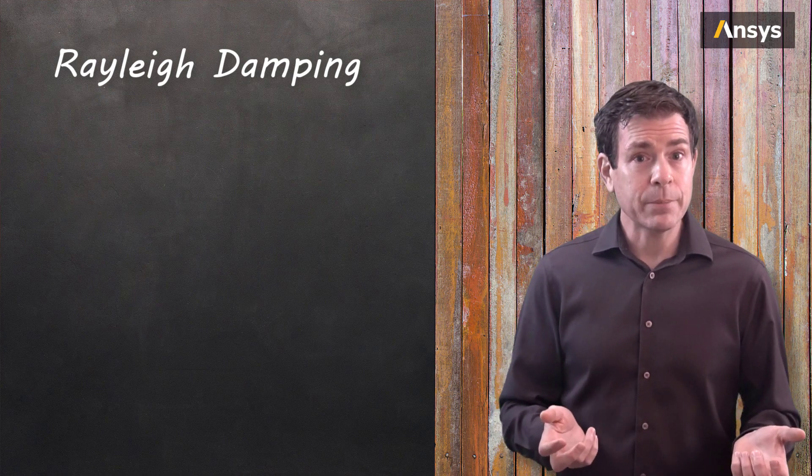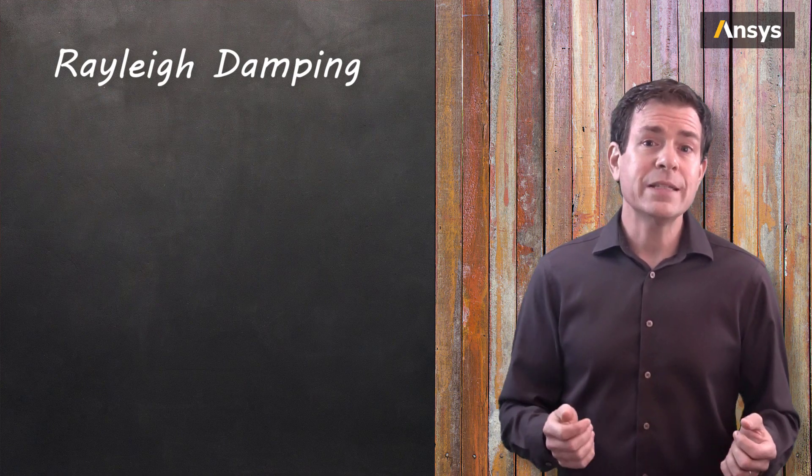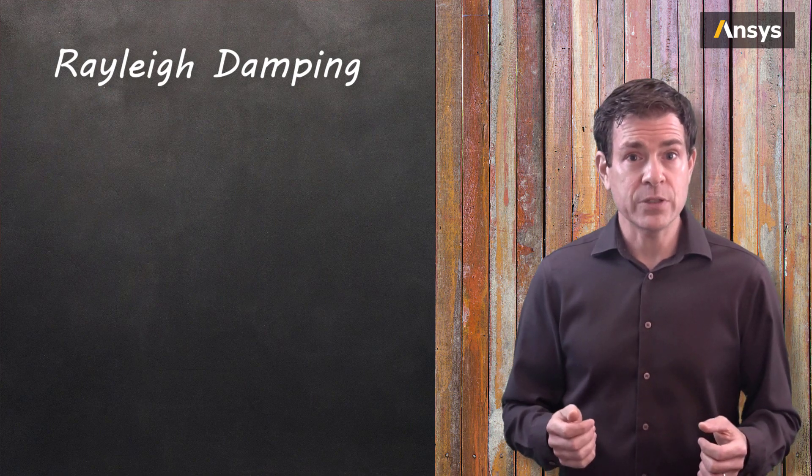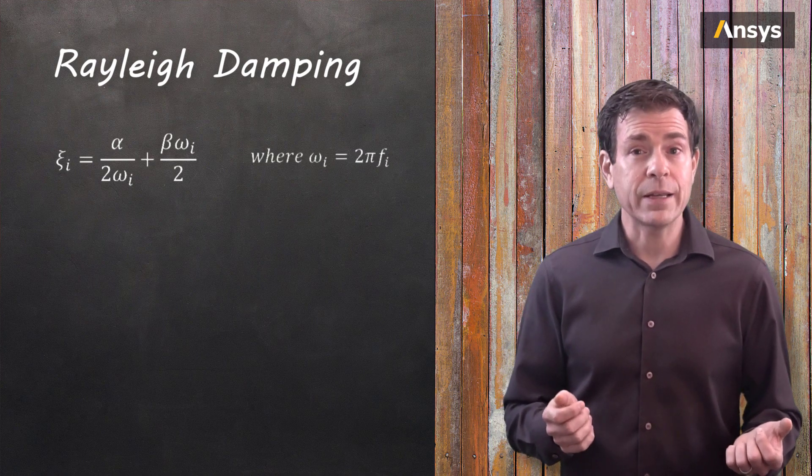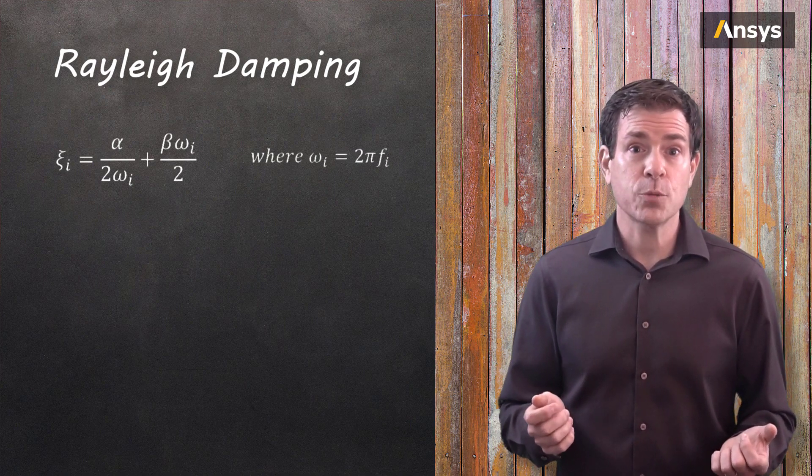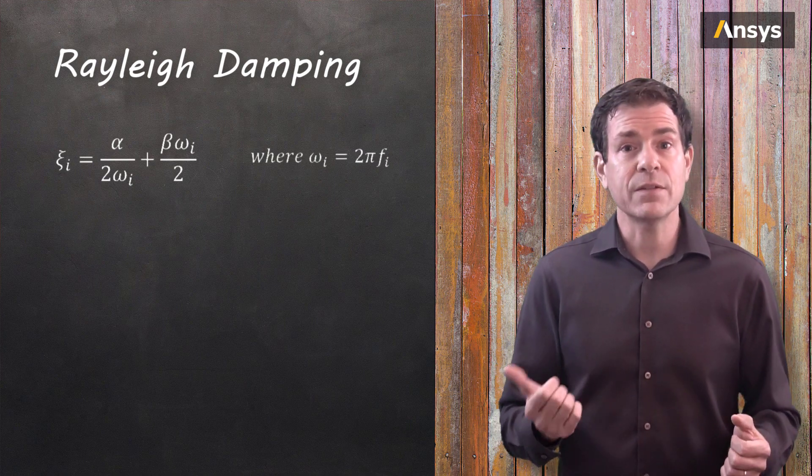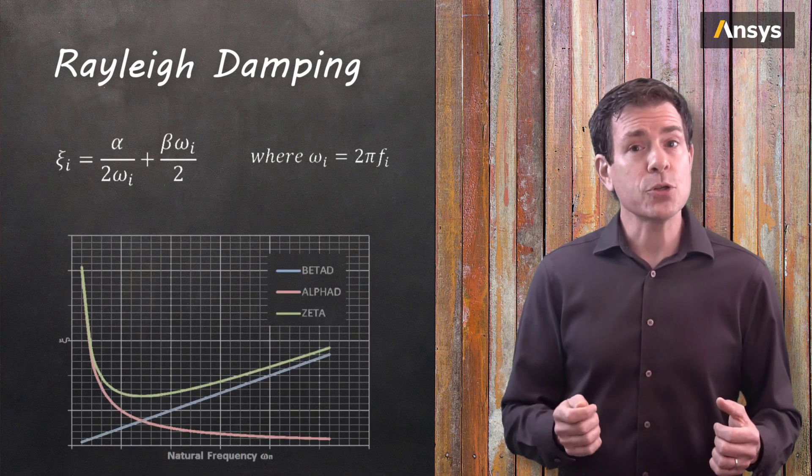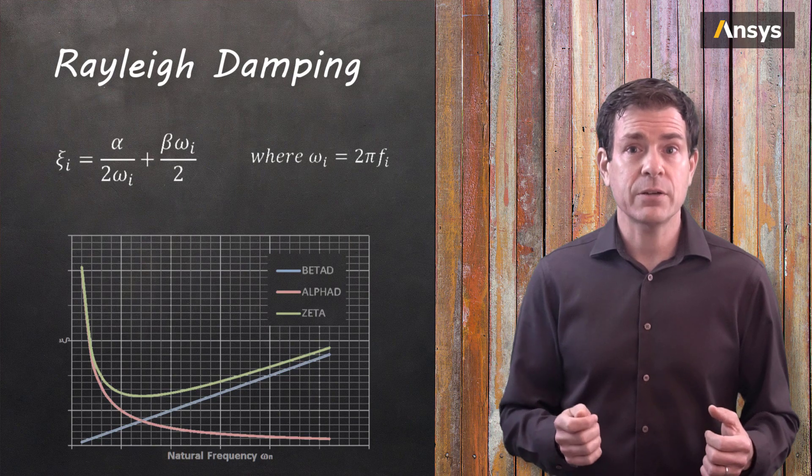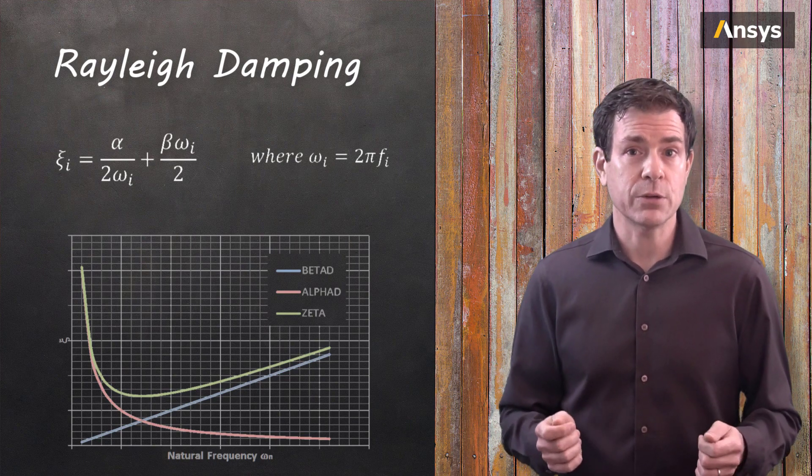How do they relate to the damping ratio? Knowing the damping ratio at a particular frequency, they can be calculated using this equation. Then the damping ratio will vary as a function of frequency with contributions from both the mass and the stiffness multipliers shown here. The challenge is this distribution will rarely match the necessary damping over a large frequency range.